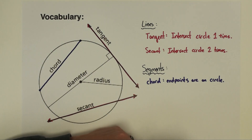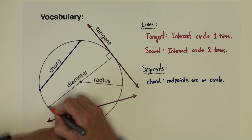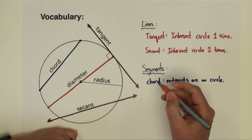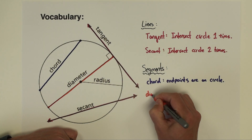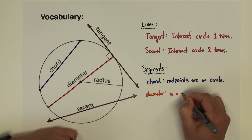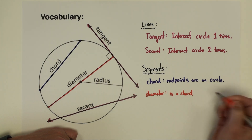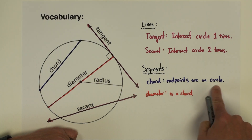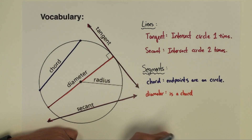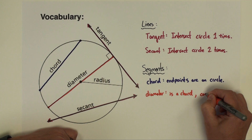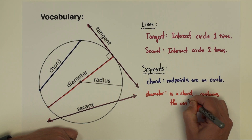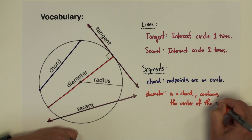The next one I want to talk about is the longest chord of a circle, and that is its diameter. The diameter, first off, it is a chord — because it's a chord, that means it has the same definition: the diameter is going to have its endpoints on the circle. But it is a chord that contains the center of the circle.